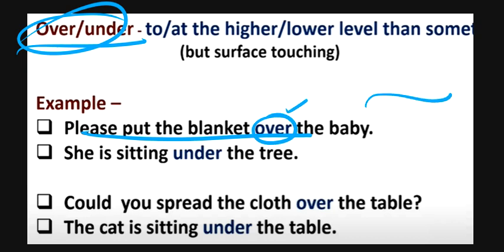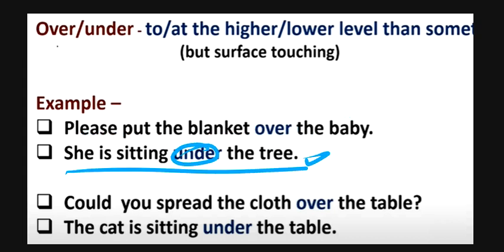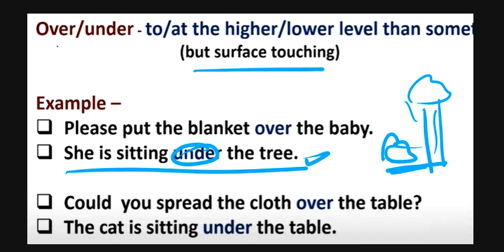If the baby has a blanket, please put the blanket over the baby. She is sitting under the tree. So when you sit under the tree, it will touch the ground. Then when we touch the surface, we use over and under.